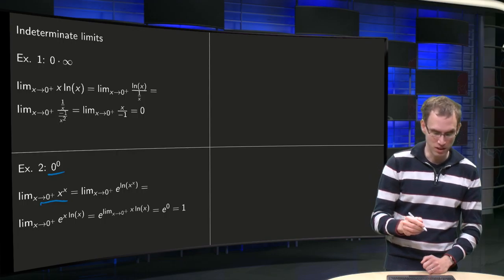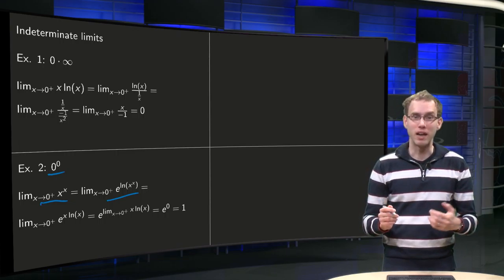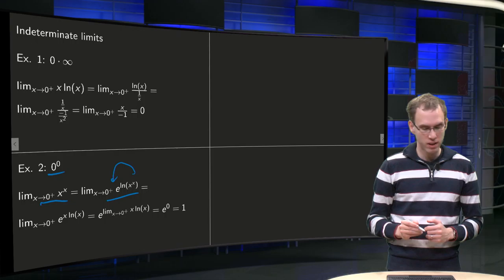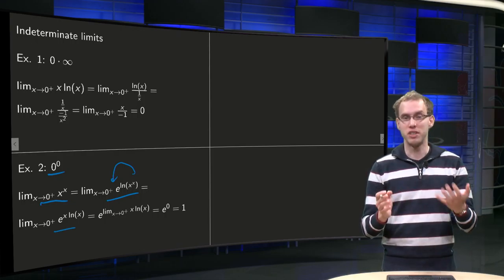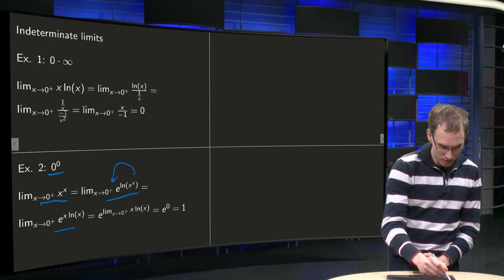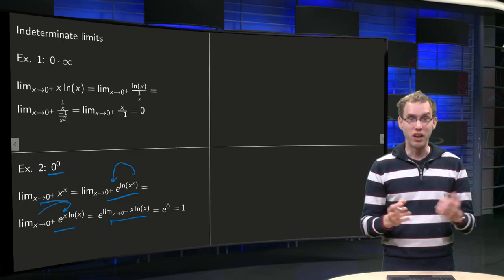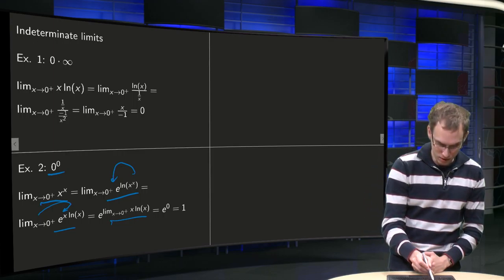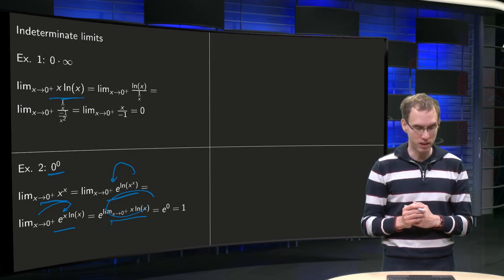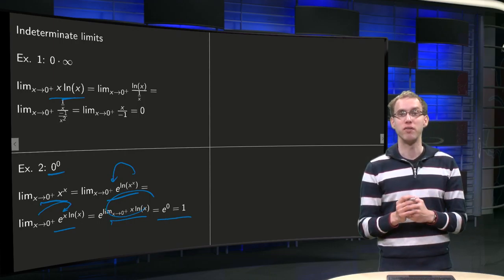So we rewrite: the limit as x→0 of e^(ln(x^x)). We can bring the exponent x in front of the logarithm, giving e^(x·ln x). Since the exponential function is continuous, we can take the limit inside, giving e to the power of the limit as x→0 of x·ln(x). We already computed that limit in Example 1 and found it equals 0. So we get e to the power 0 equals 1, meaning the limit as x→0 of x^x equals 1.